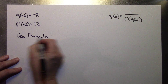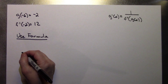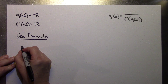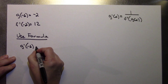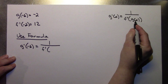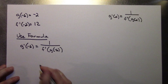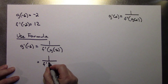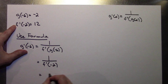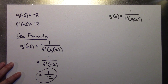My original question asked me to find g prime of negative 6. So g prime of negative 6 equals 1 over f prime of g of negative 6. We calculated g of negative 6 is negative 2, so this simplifies to 1 over f prime of negative 2. We calculated f prime of negative 2 equals 12, so the answer is 1 over 12. My derivative of the inverse function at negative 6 is 1 over 12.